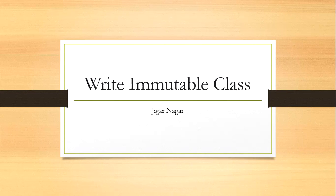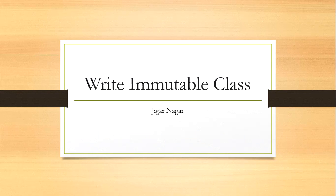Hello friends, today we will see how we can create the immutable class. Before understanding how we can create the immutable, we have to understand what is immutable. Immutable means the object state should not be changed once it is created. For example, suppose I have an Employee class with properties like ID, name, and salary. Once it is created with its default values, it should not be allowed to a user or a program to update it — that's immutable.